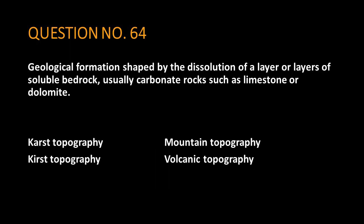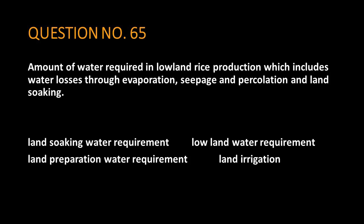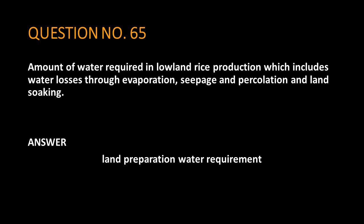Question number 64: geological formation shaped by the dissolution of a layer or layers of soluble bedrock, usually carbonate rocks such as limestone or dolomite. The answer is: karst topography. Question number 65: amount of water required in lowland rice production which includes water losses through evaporation, seepage and percolation, and land soaking. The answer is: land preparation water requirement.